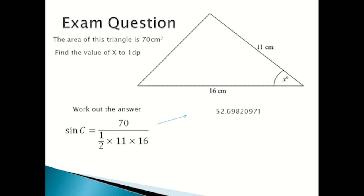So you would work out the answer and you'll get 52.69820971, which you would put to one decimal point as 52.7 degrees. So the size of x is 52.7 degrees.